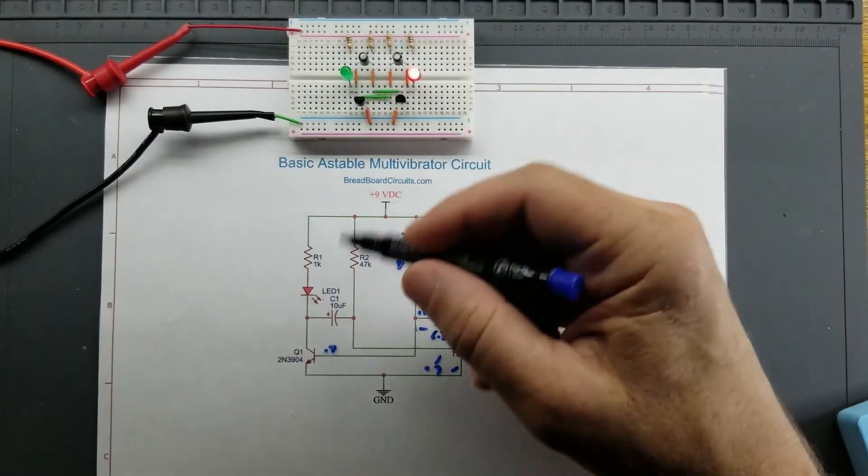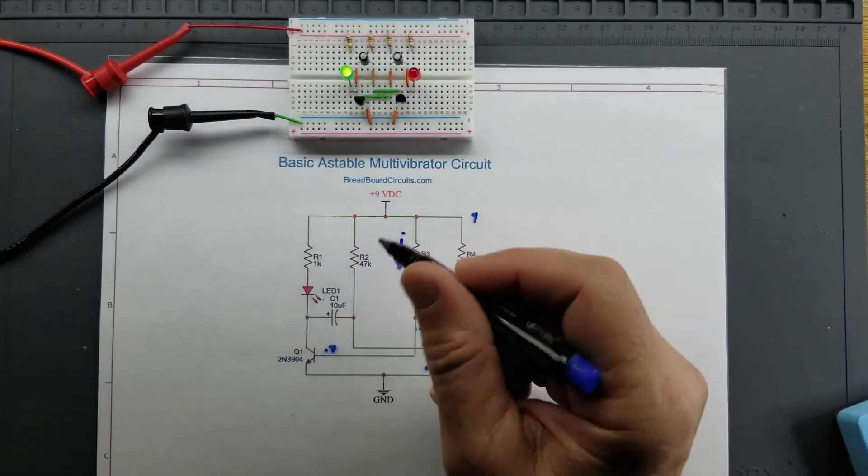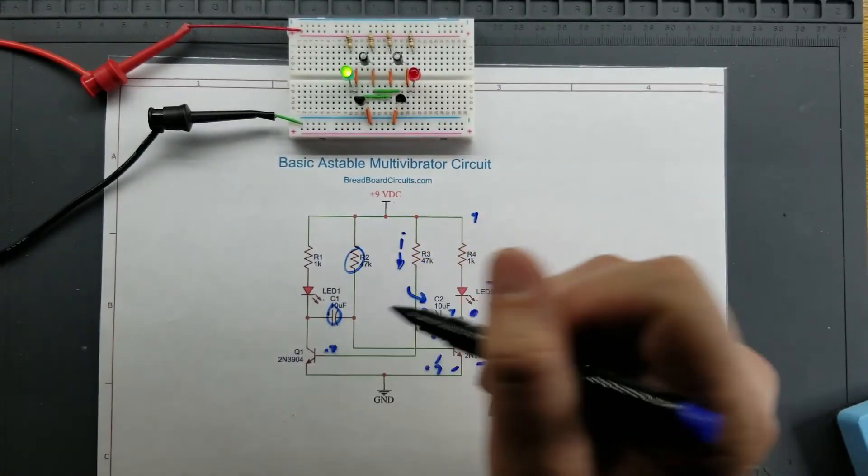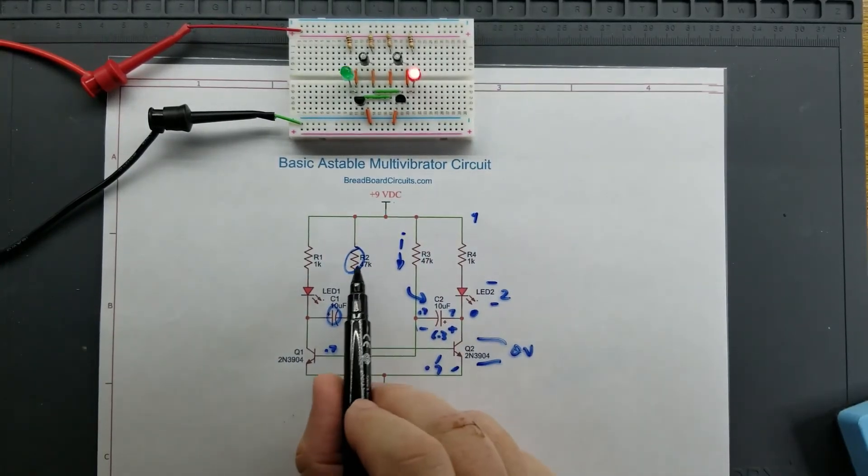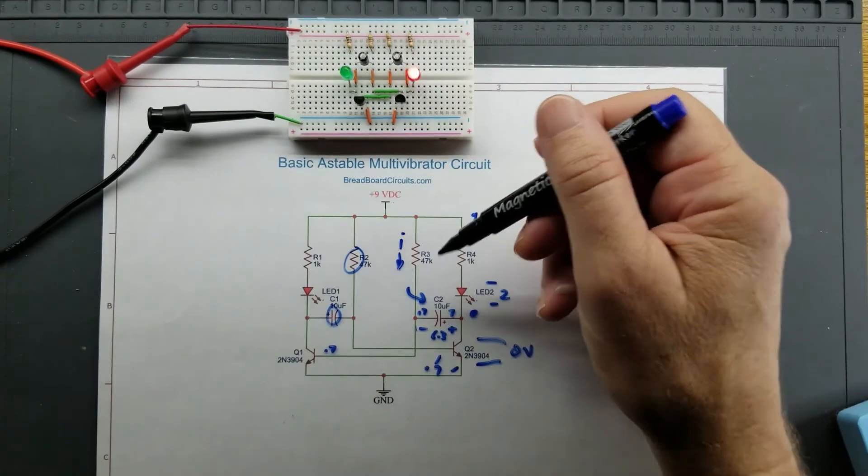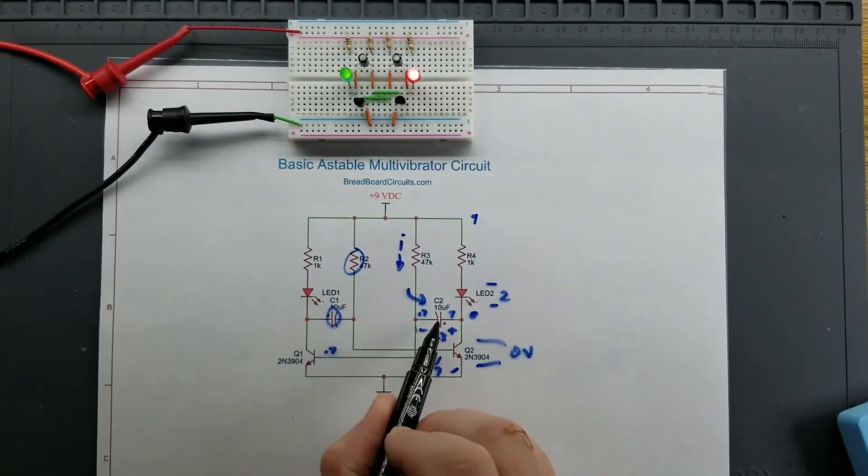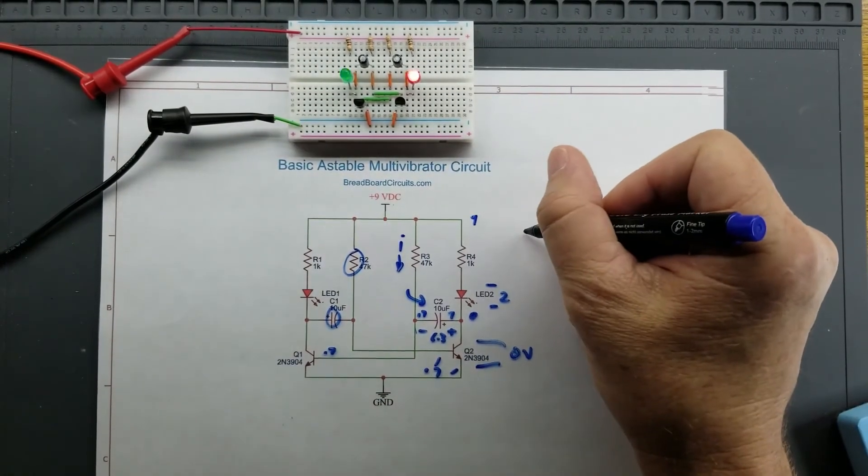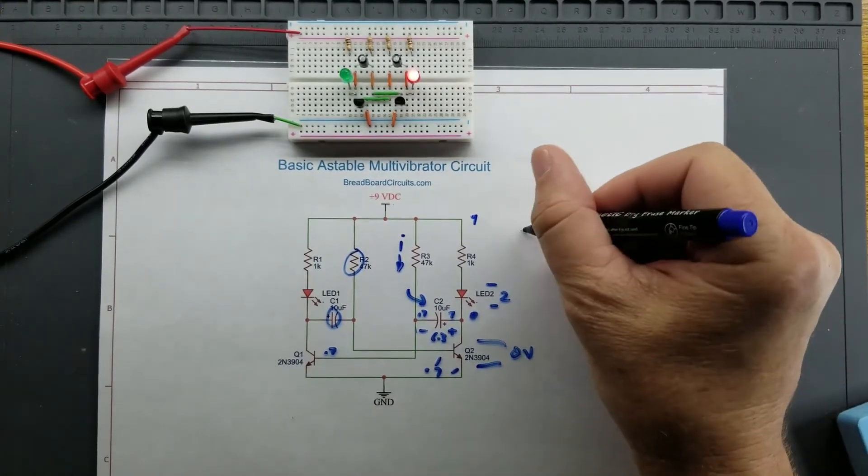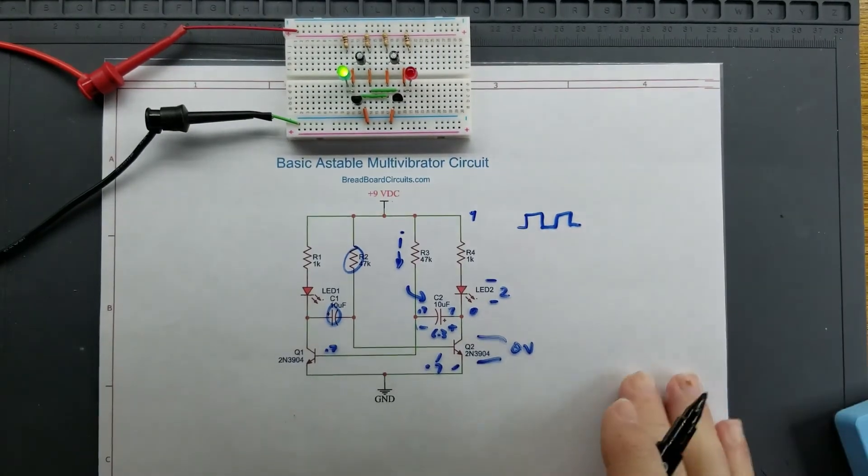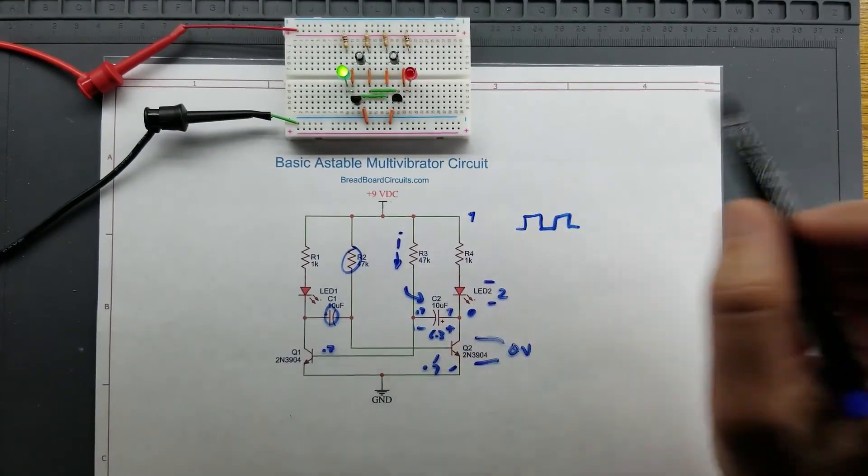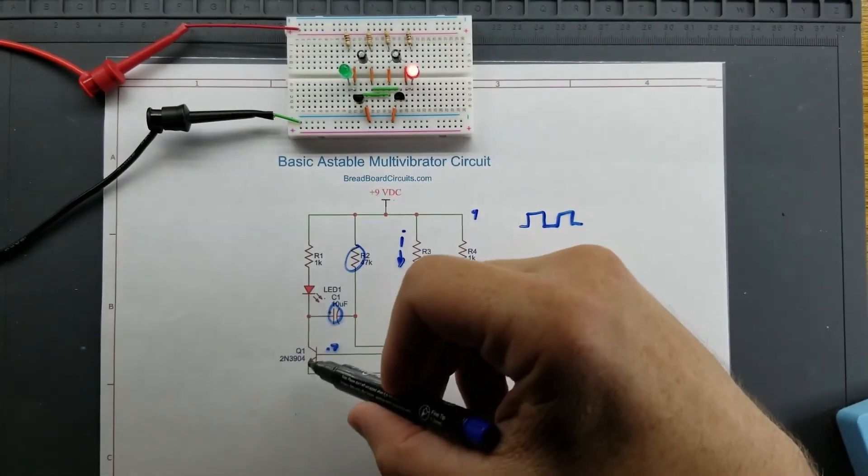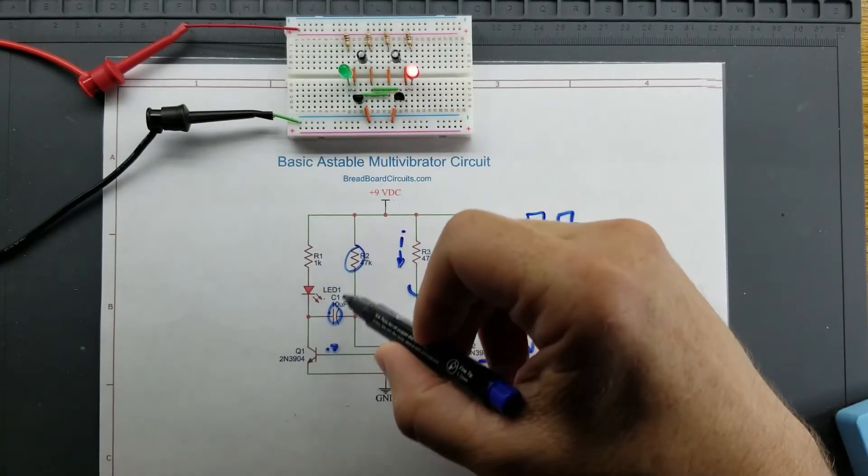The frequency at which this oscillates is dependent on the RC time constant that is defined by that resistor and that capacitor, that resistor and that capacitor. Notice that the values of these resistors are the same. They're 47K. The values of these capacitors are the same. They're 10 microfarad, which makes this a symmetrical circuit, which means we're going to have a 50% duty cycle. In order to set the frequency for this, there's a formula to do that.